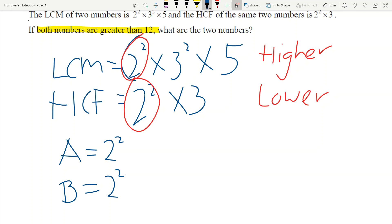Next, the higher one is 3² and the lower one is 3, so which means that one number have 3², the other number have 3. Then next, one number have 5, the other number don't have 5.